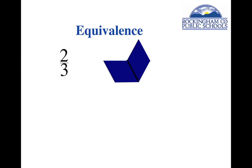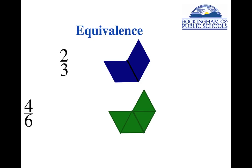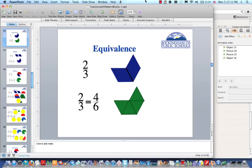Here's another equivalence example: two thirds. Starting with two thirds — that's two blue rhombuses — what other pieces could make the same shape? Using all greens, it would take four green triangles, so four sixths makes the same shape. You may also notice that two thirds is equivalent to a half plus a sixth: if you take the bottom part — the red trapezoid, one half — and put a green triangle on top of it, a half plus a sixth equals two thirds. When you're ready, click on the next video where we'll start adding fractions.